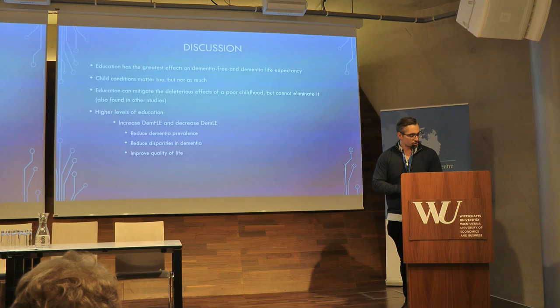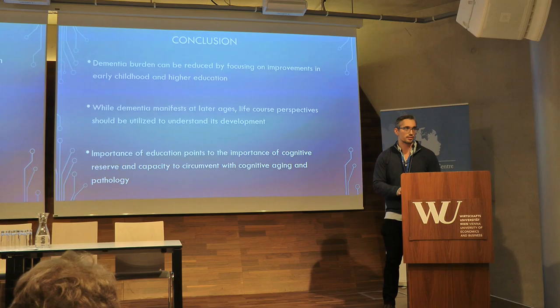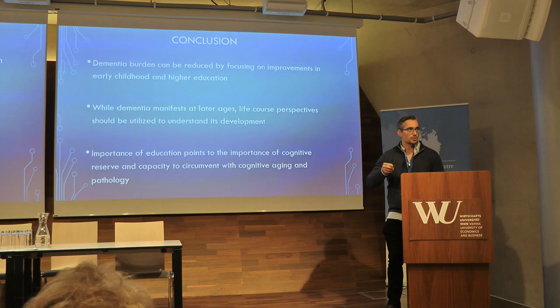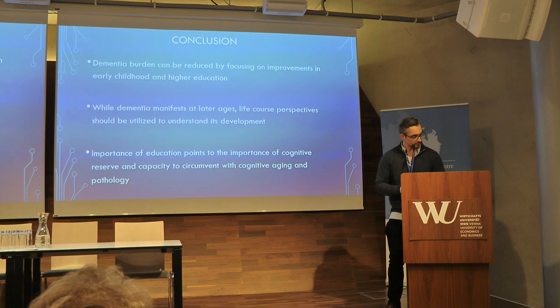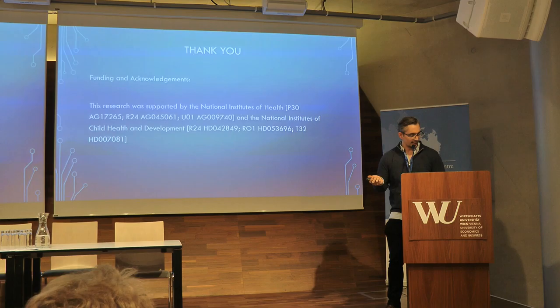We should be able to reduce some of those barriers in dementia and improve quality of life. The conclusion is that dementia burden can be reduced by focusing on improvements in early childhood and higher education — two of the most fundamental ways to improve population health. Dementia manifests at later ages, but this is a life course process. We shouldn't only look at health behaviors at 50 or before, but also at early conditions. The importance of education points to the importance of cognitive reserve and the capacity to circumvent cognitive aging and pathologies. Thank you.